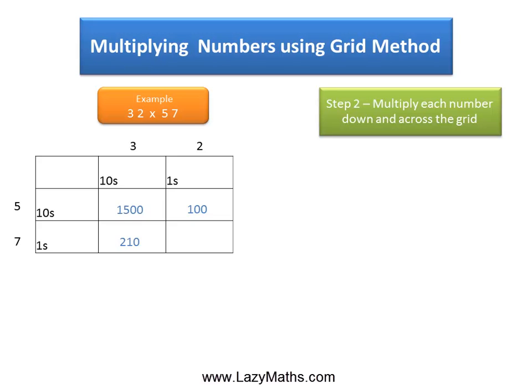Next we multiply the 7 with the 30 and we get 210, and then we multiply the 7 with the 2 and we get 14. The next step is to simply add all of these products that we got.